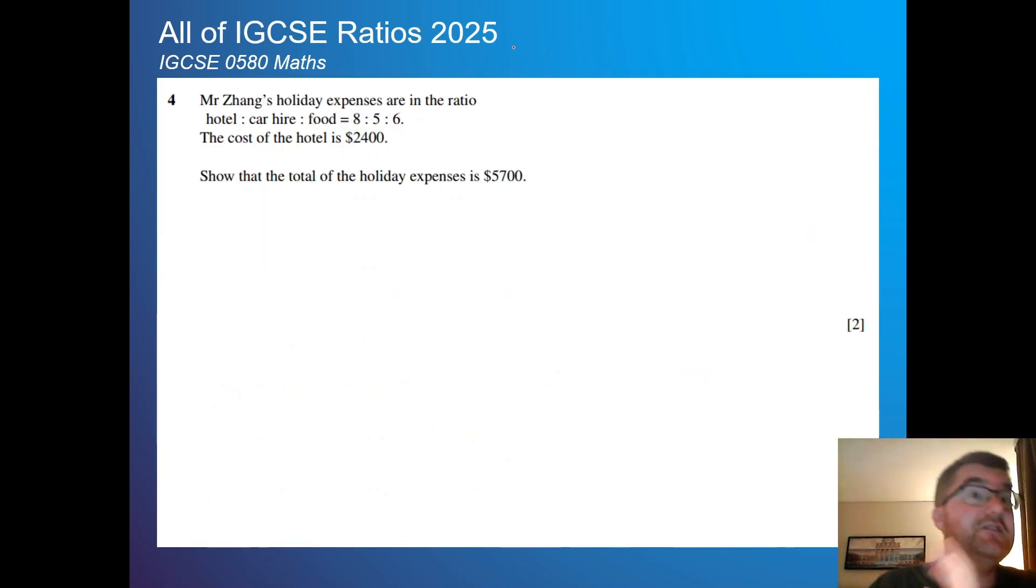On to question 4. We're going to get to some hard questions in a moment. So Mr. Zhang's holiday expenses are in this ratio: hotel to car hire to food, 8 to 5 to 6. The cost of the hotel is 2400. Show the total. So we've got 8 to 5 to 6. So H, CH for car hire, and food. The cost of the hotel is 2400.